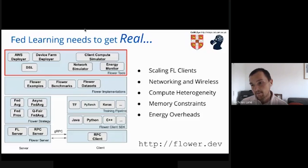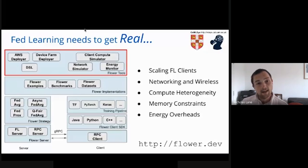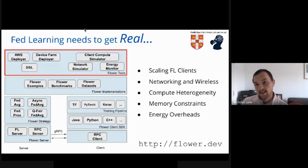Memory constraints, energy, and so on. We really want to build a tool that could make these experiments easy, and also address scalability. Often people were evaluating on maybe some machines they have in the lab. But what happens if you want to run an experiment with say a hundred clients or even a thousand clients? In Flower, we have a component that allows you to instantiate cloud instances and have them operate as different types of federated learning clients.